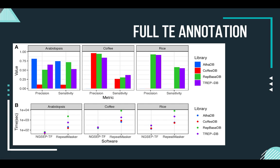Here we can see that if we choose a representative database, we can annotate our genomes with good precision and sensitivity. We can also improve precision and sensitivity results by increasing the number of iterations of the annotation, using the output annotation as the input of the next round.